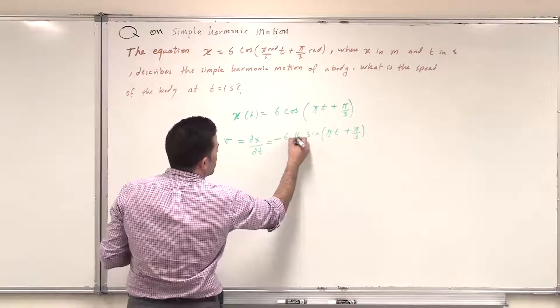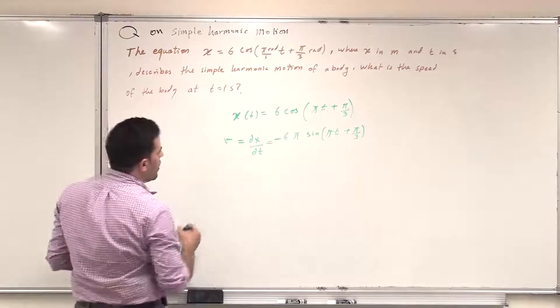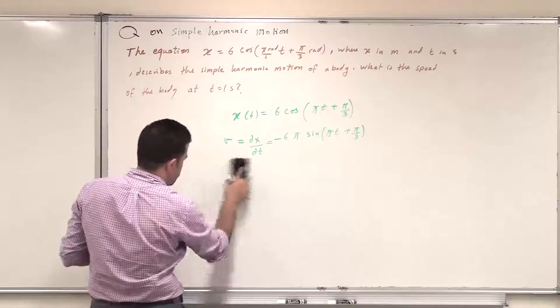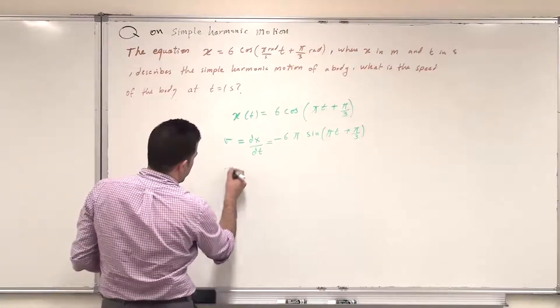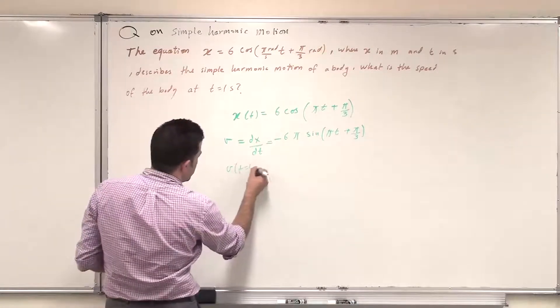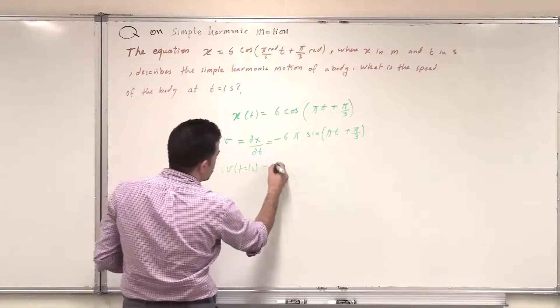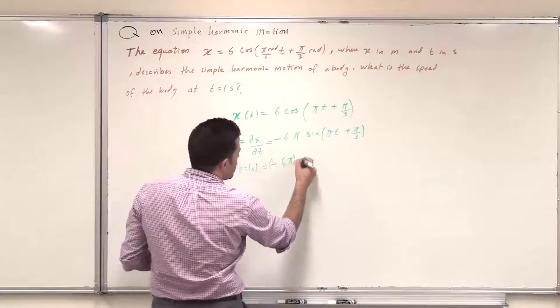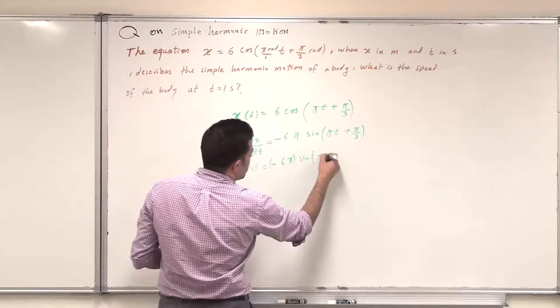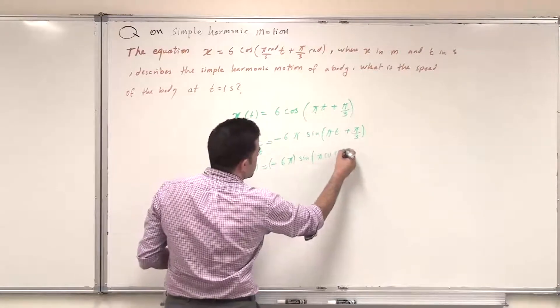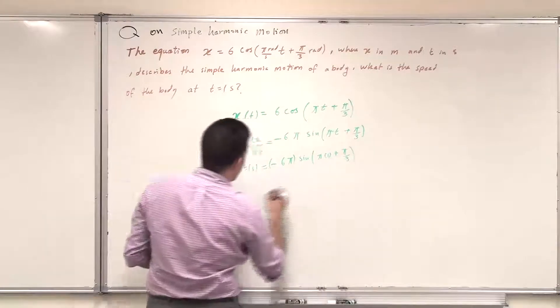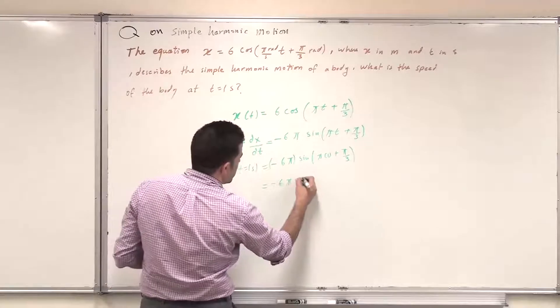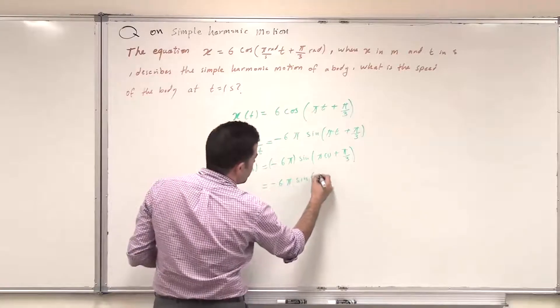So it is basically π. And now v at t, v at time t equal 1 second. We substitute minus 6π sin(π(1) + π/3), which is basically minus 6π sin(4π/3).